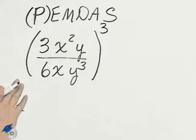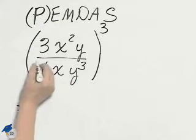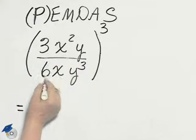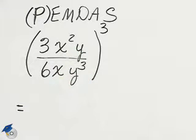This is an example of order of operations. Within the parentheses, 3x squared y divided by 6xy cubed, all raised to the third power.